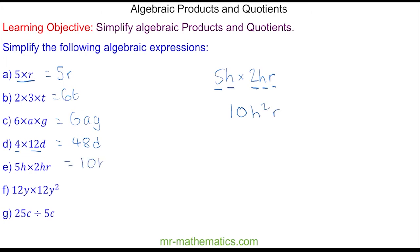So it is 10h squared r. For question f, 12y multiplied by 12y squared. We have 12 times 12 which is 144.